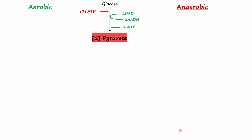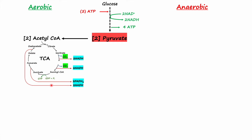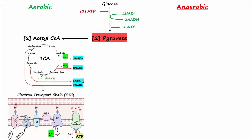Before jumping into the Cori cycle, let's quickly talk about aerobic and anaerobic metabolism. Glucose is broken down into two molecules of pyruvate through glycolysis. During this process, two molecules of ATP are consumed and four molecules of ATP are synthesized, and NAD+ is reduced to NADH. The fate of pyruvate is then determined by the presence or absence of oxygen in the cells.